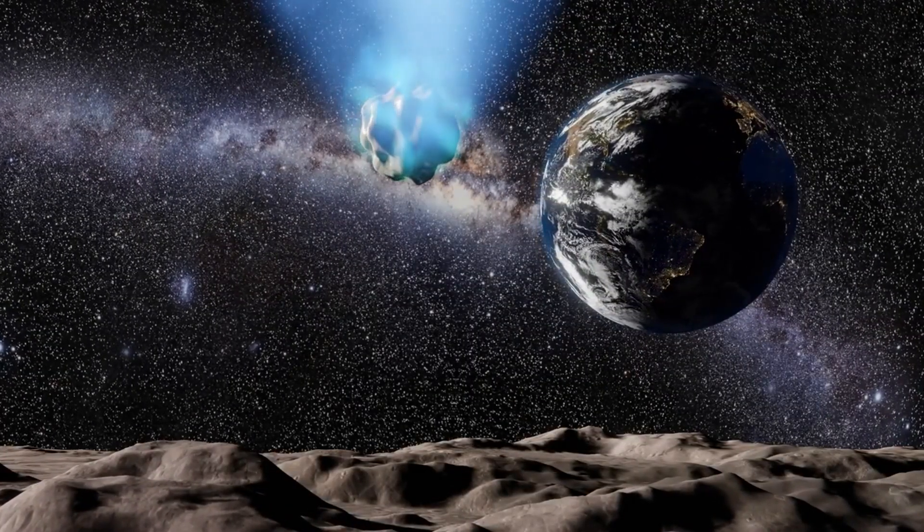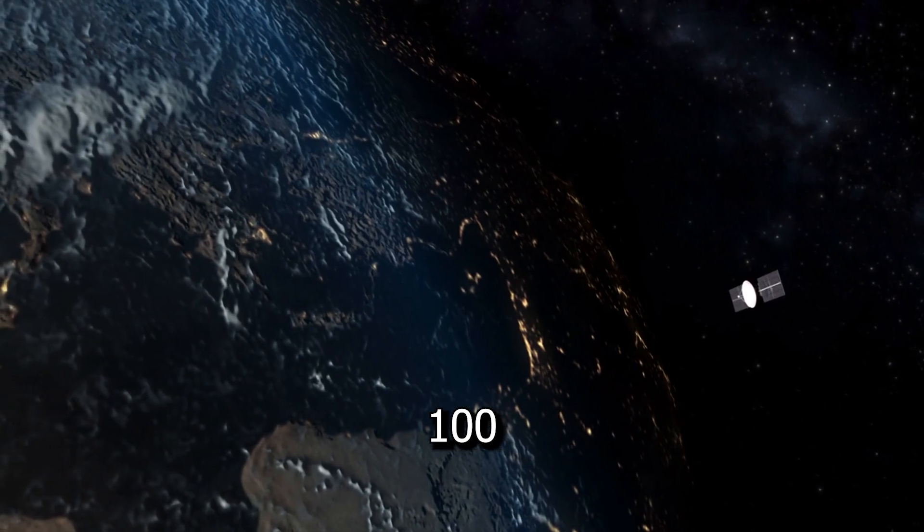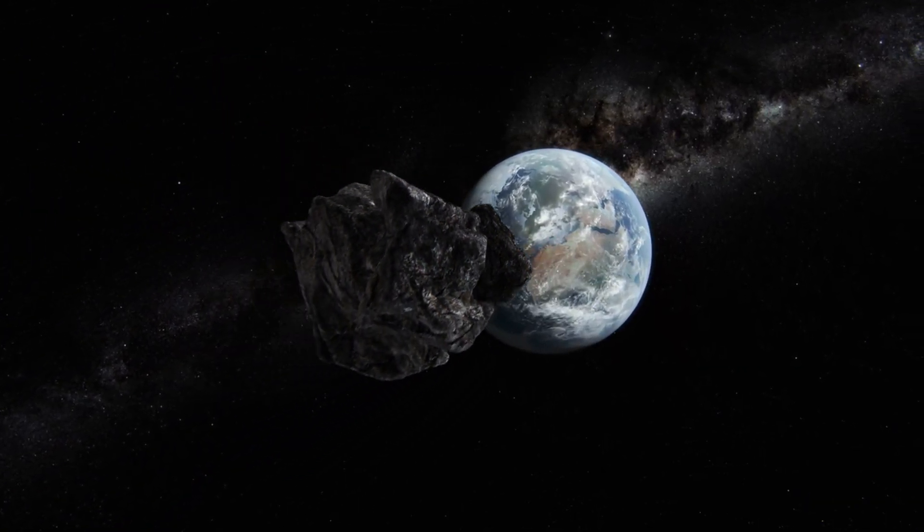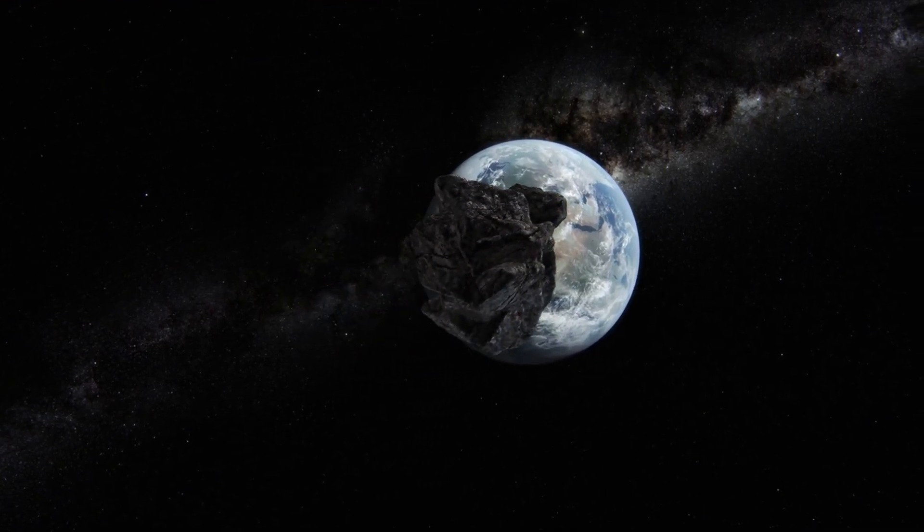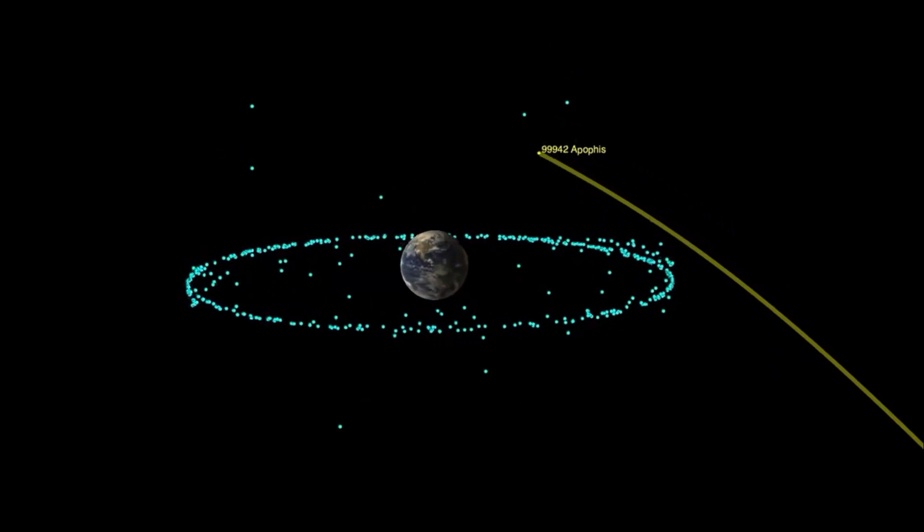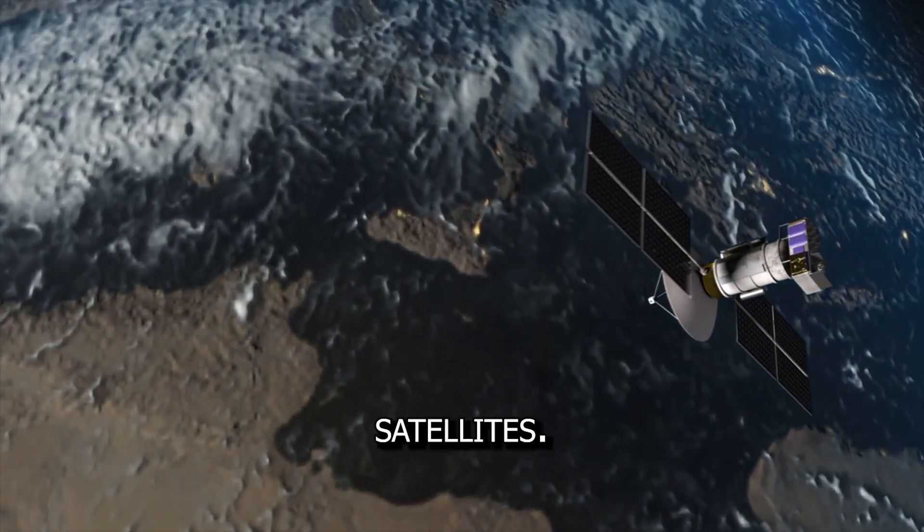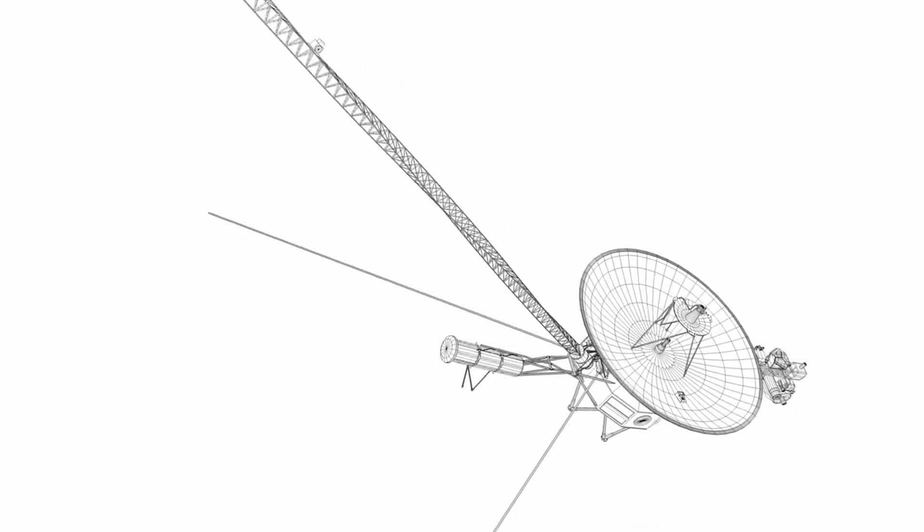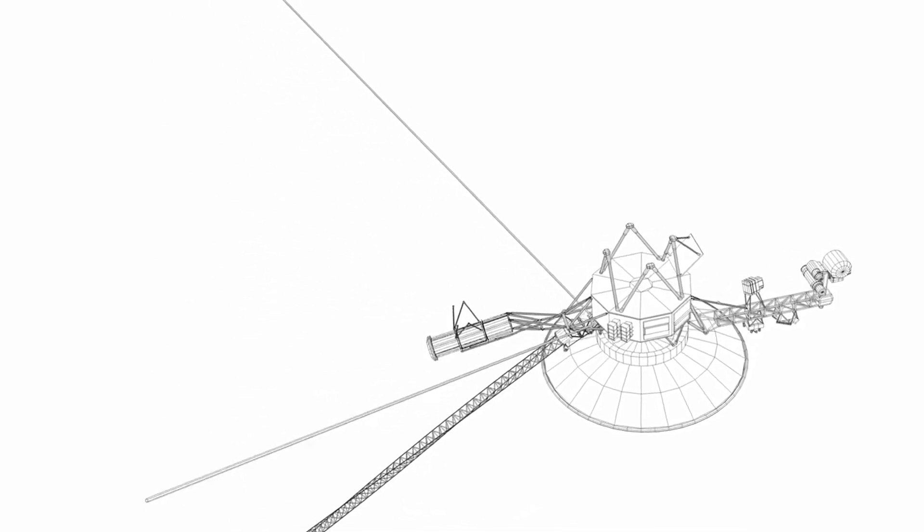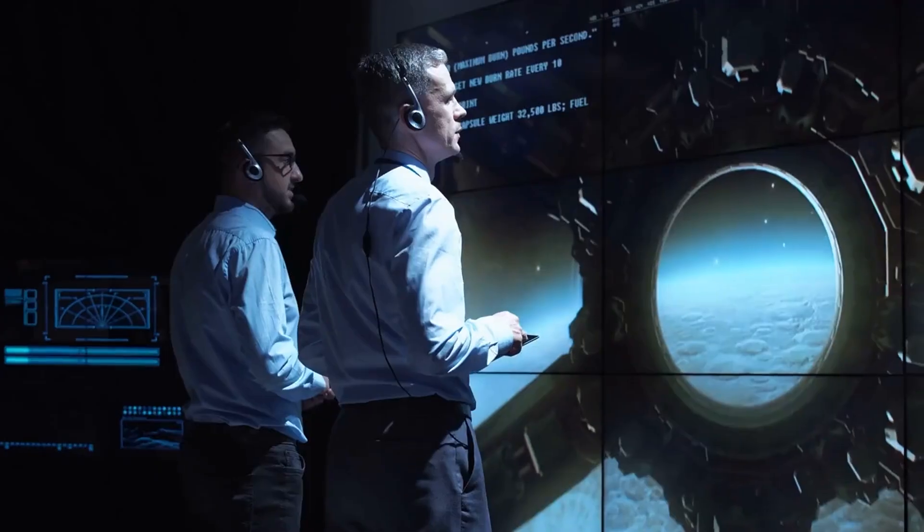Thankfully, further observations ruled out any chance of impact then, or for at least the next 100 years. However, Apophis will still make a very close flyby of Earth on April 13th, 2029. It'll come within about 31,000 kilometers, 19,000 miles, of our planet's surface, closer than some of our communication satellites. This flyby offers a unique opportunity for scientists to study Apophis up close, with space agencies planning observations and even potential spacecraft missions.